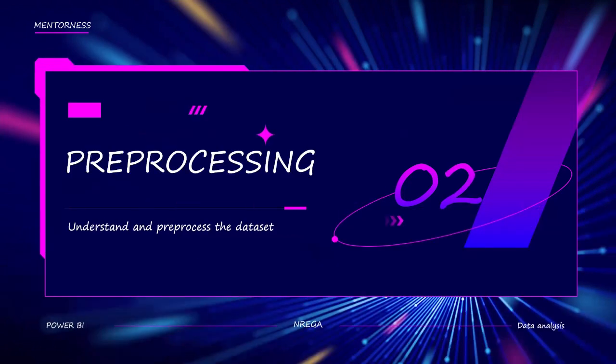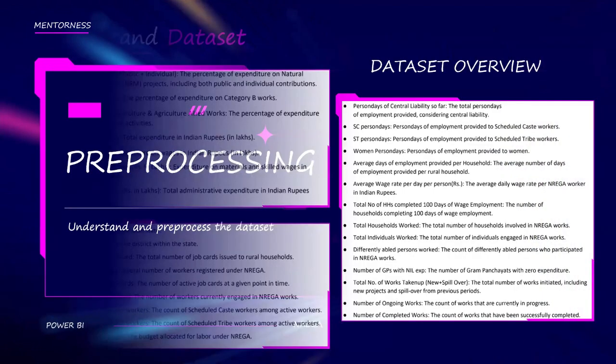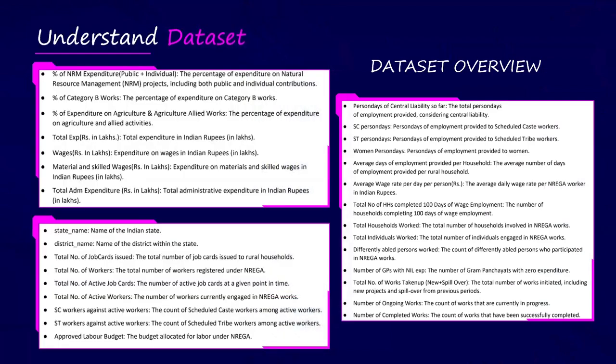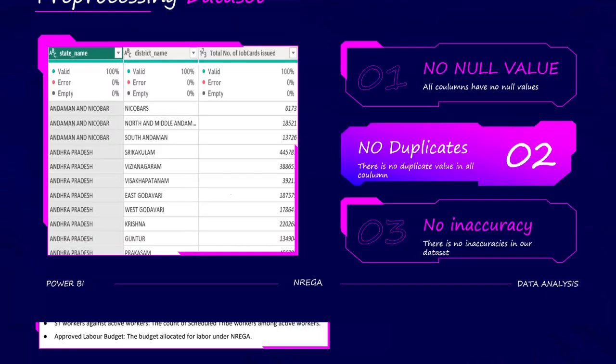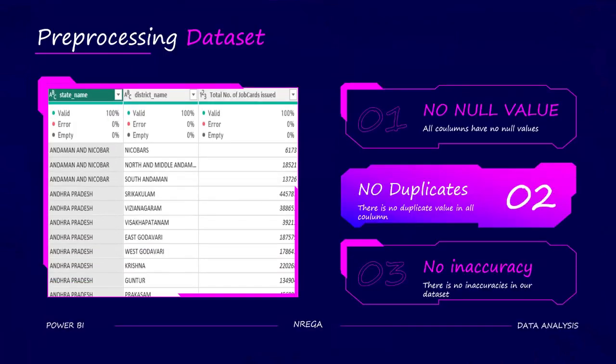Second, we are going to pre-process and understand our dataset. Our dataset has the following columns. To pre-process our dataset, first we are going to see if our dataset has any null values, any duplicates, or any inaccuracy. You can see that this table shows there is no error, no empty values, no null values in our dataset, and there is no inaccuracy. So there is no need to pre-process our dataset.